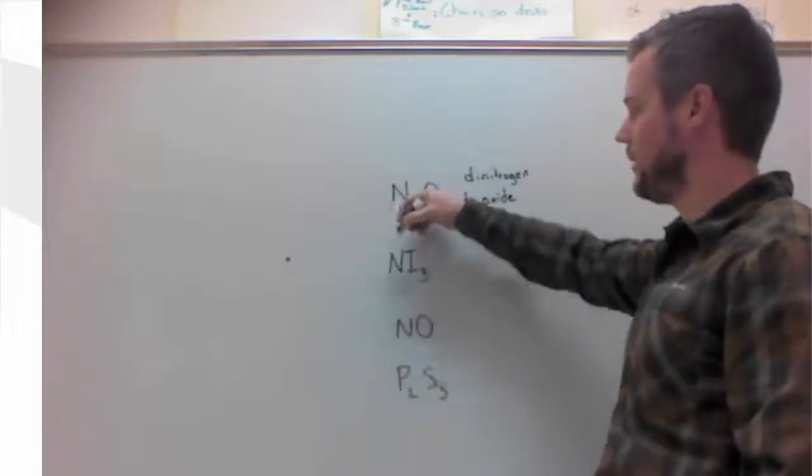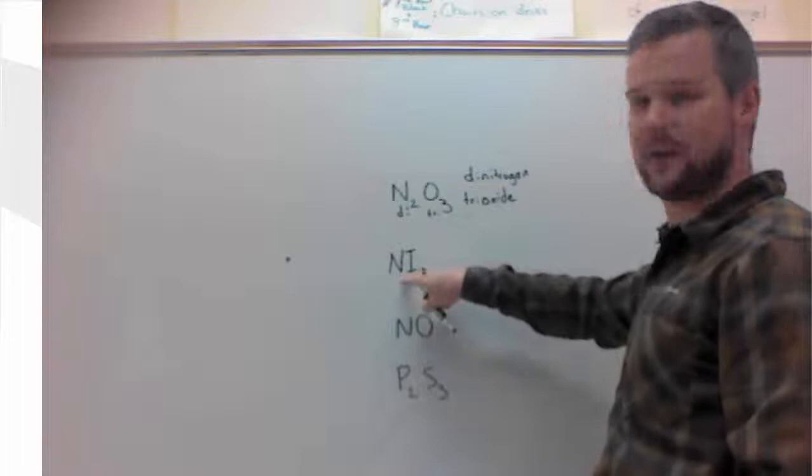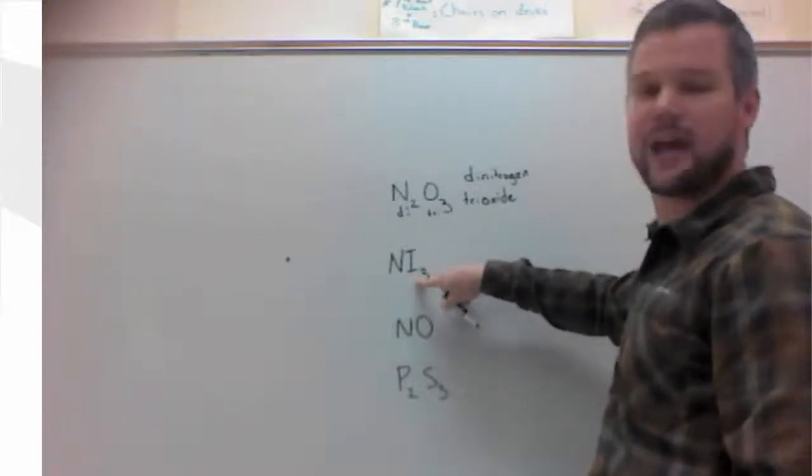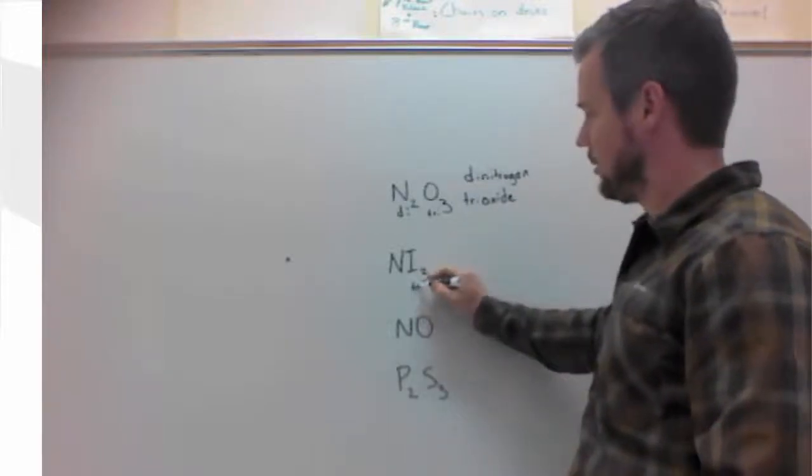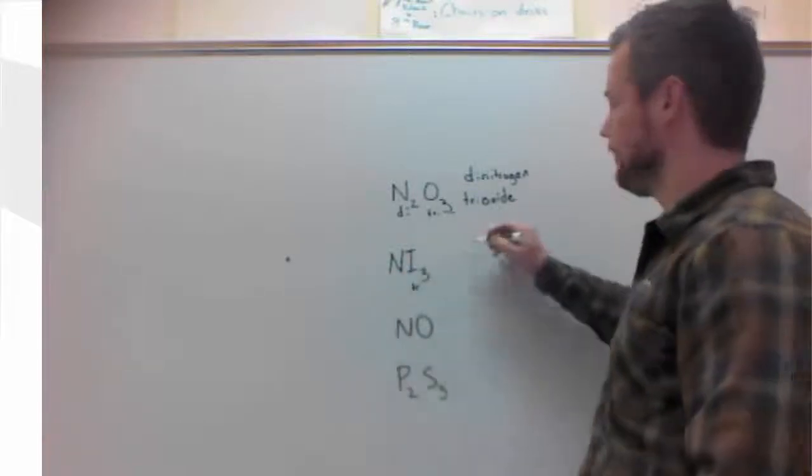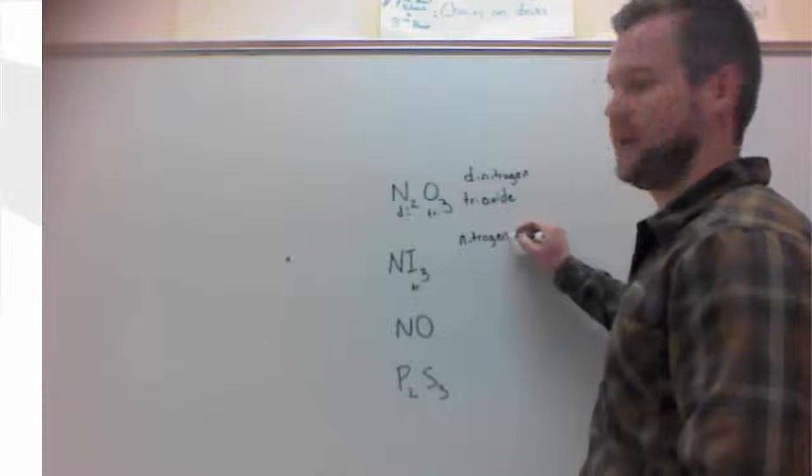The second problem, again, nitrogen is a nonmetal, so nonmetal to nonmetal. There's no subscript on the nitrogen, so it doesn't get a prefix. The second atom always has a prefix. Three, as we just saw, is tri. The first atom gets its full name. So we have nitrogen.